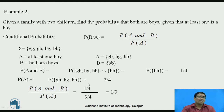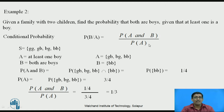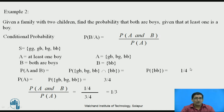Now consider the second example. Given a family with two children, find the probability that both are boys, given that at least one is a boy. Here we use conditional probability: P(B|A) = P(A and B) divided by P(A). The sample space is: both girls, girl-boy, boy-girl, and both boys. A is at least one boy — that is {girl-boy, boy-girl, boy-boy}. B is both boys — {boy-boy}. P(A and B) = 1/4, P(A) = 3/4, and substituting gives P(B|A) = 1/3.